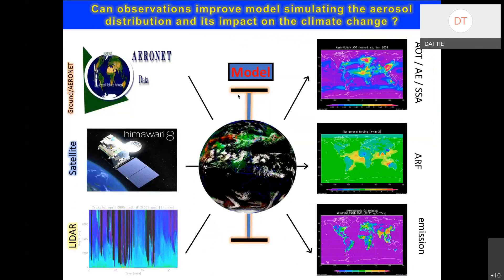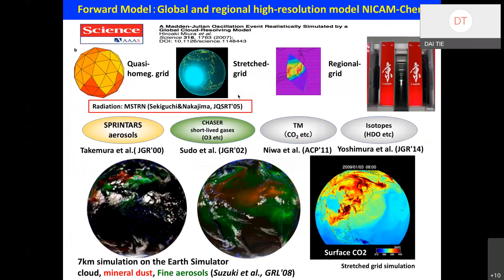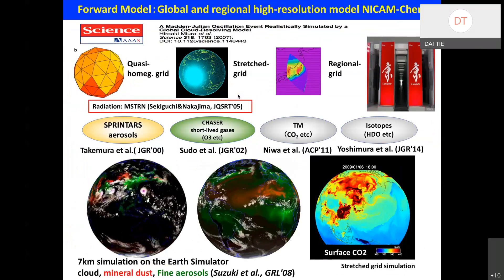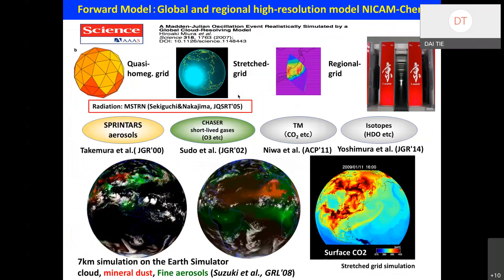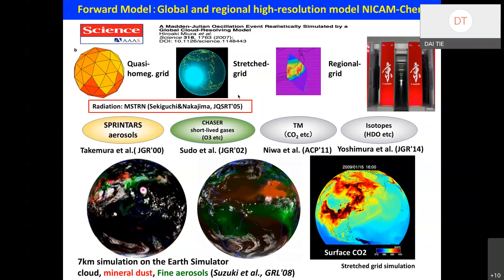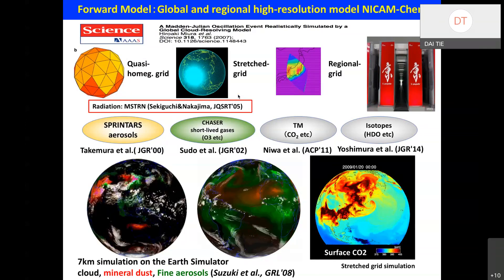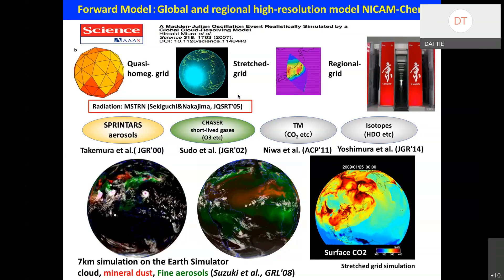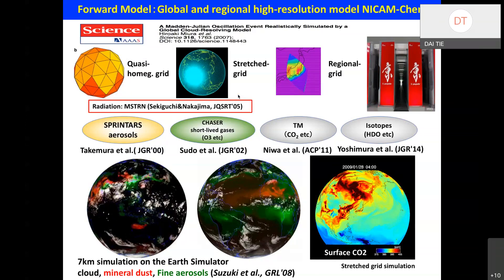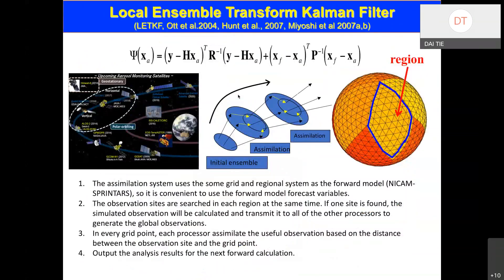We use data assimilation to improve aerosol modeling. The forward model is a global-to-regional high-resolution model developed by the University of Tokyo. We use this model as the forward model to simulate global aerosols. The assimilation method is the Local Ensemble Transform Kalman Filter, which is used to estimate and optimize aerosol information.